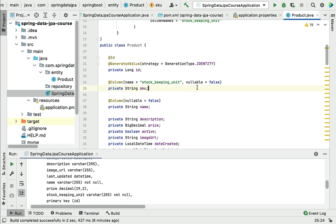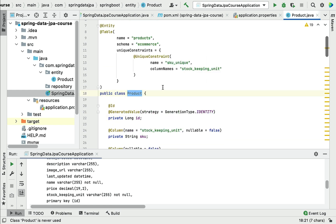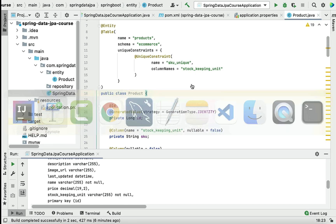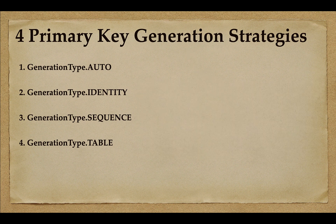Welcome back. In the previous lecture we saw how to use JPA annotations to customize the table structure. In this lecture we'll see four types of JPA-provided primary key generation strategies. JPA specification supports four different primary key generation strategies that generate primary key values programmatically or use database features like auto-incremented columns or sequences. The four strategies are: AUTO, IDENTITY, SEQUENCE, and TABLE.